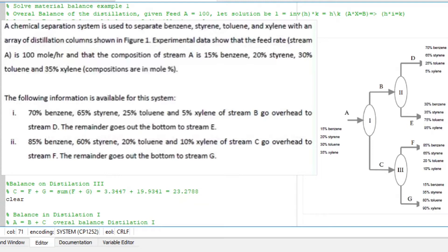We are told that a chemical separation system is used to separate benzene, styrene, toluene, and xylene with an array of distillation columns shown in this figure below.